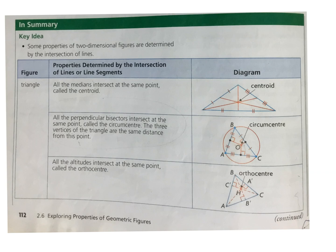The circumcenter — what is it? All the perpendicular bisectors intersect at the same point. So if you have a triangle, you have to find a perpendicular bisector from each side of the triangle.